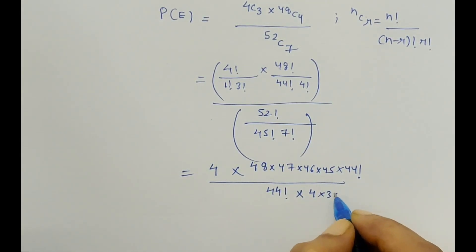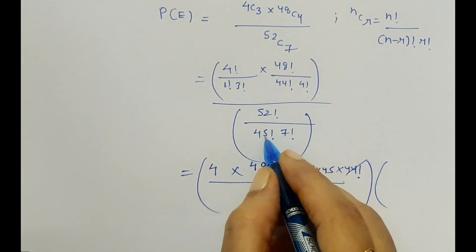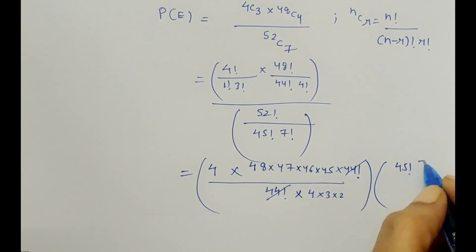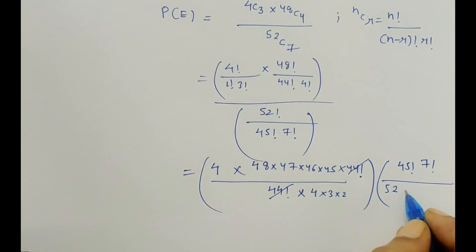So this 4 factorial and this 4 factorial gets cancelled. This gets into the numerator: 45 factorial times 7 factorial upon - let's expand 52 also.